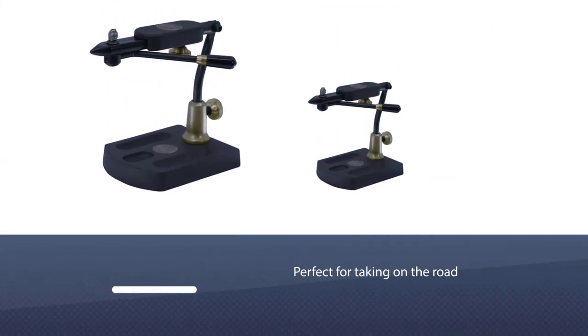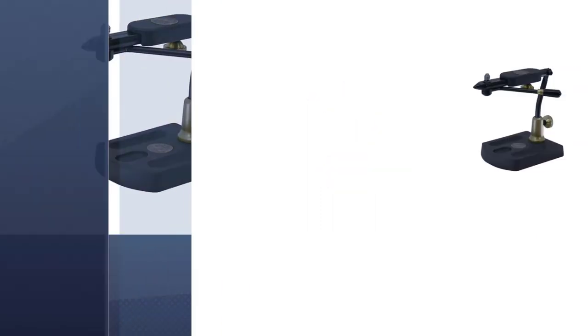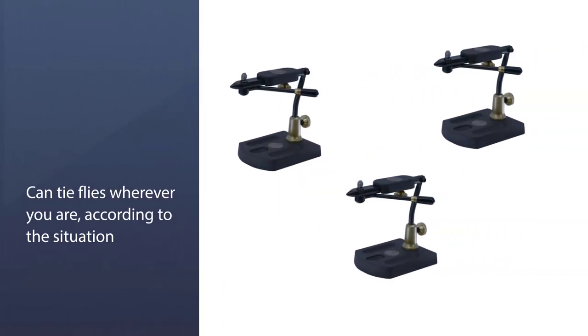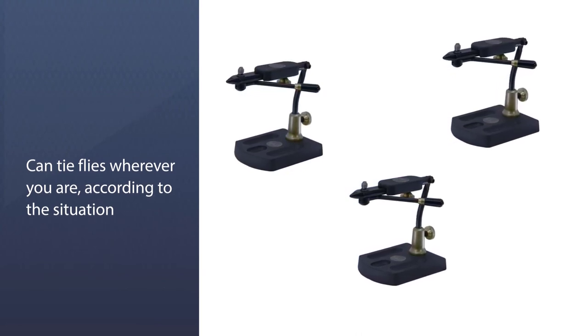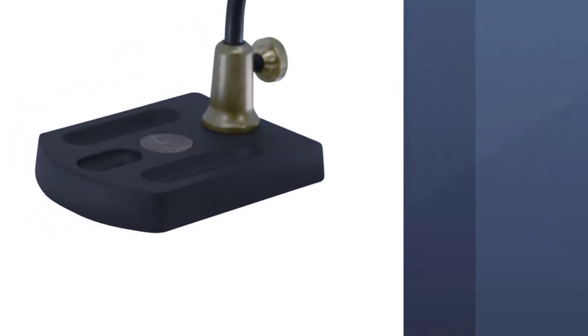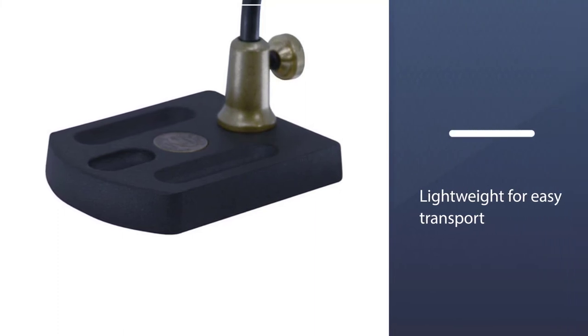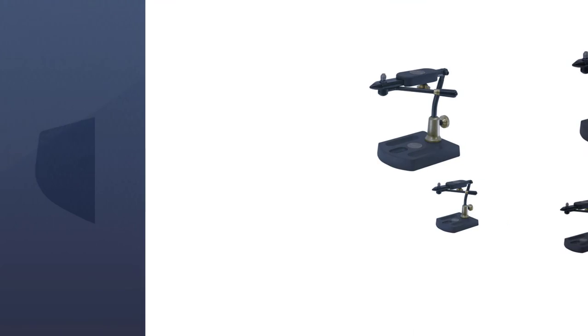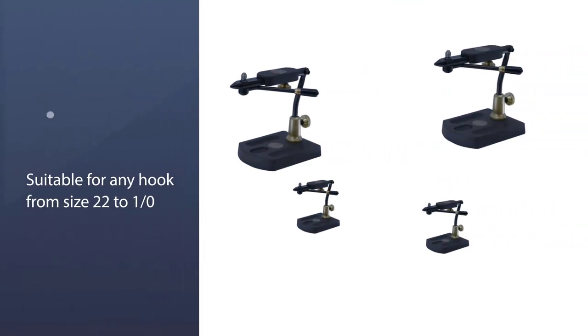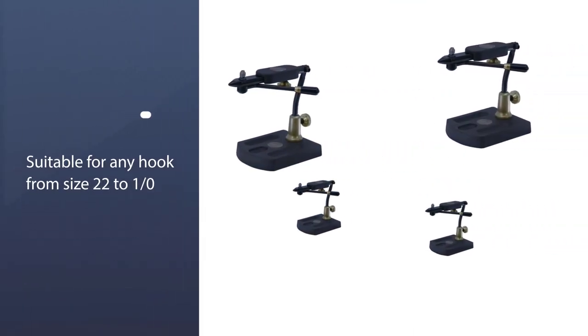Regal is well-known for creating top-quality products for anglers, and this vise is no different. It may be small, but it lacks nothing when it comes to the build and materials used. The Regal Travel Vise is built to last, with a robust jaw mechanism and aluminum base. It's kitted out with the Regal regular jaw head, which is suitable for any hook from size 22 to 1.0.